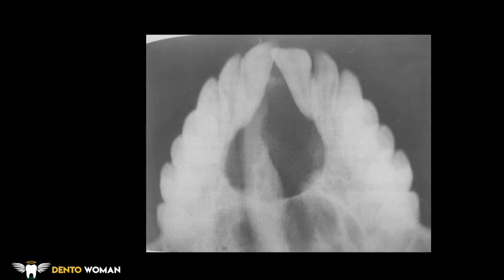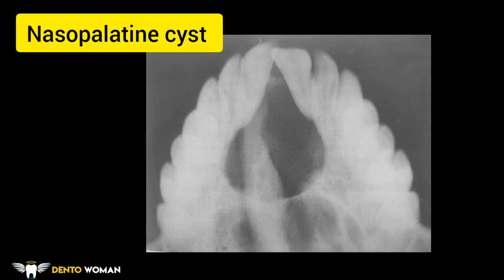The maxillary occlusal view shows a nasopalatine cyst with a well-circumscribed unilocular cystic radiolucency in the anterior maxilla between the central incisors. The lesion is round with corticated margins; superiorly it extends into the palate and vault, causing expansion and resorption of the nasal floor.